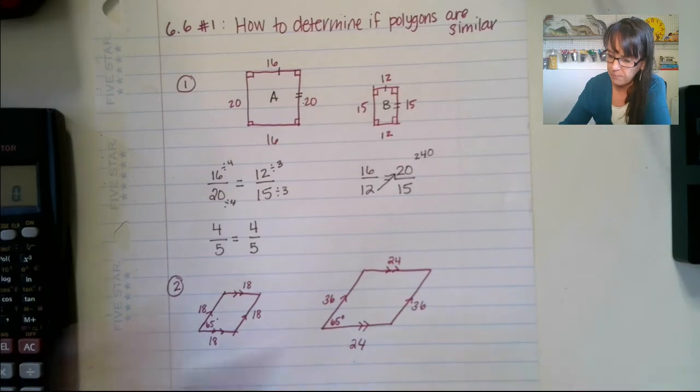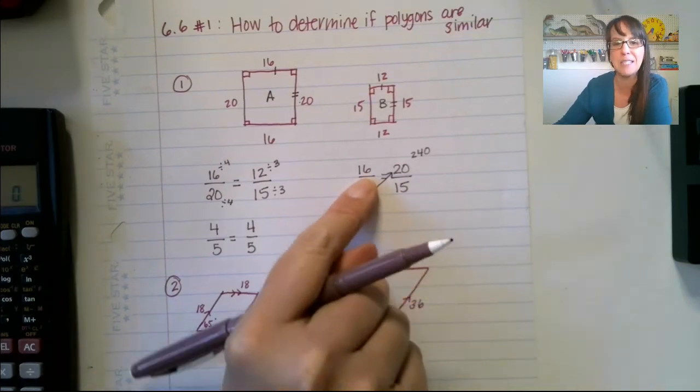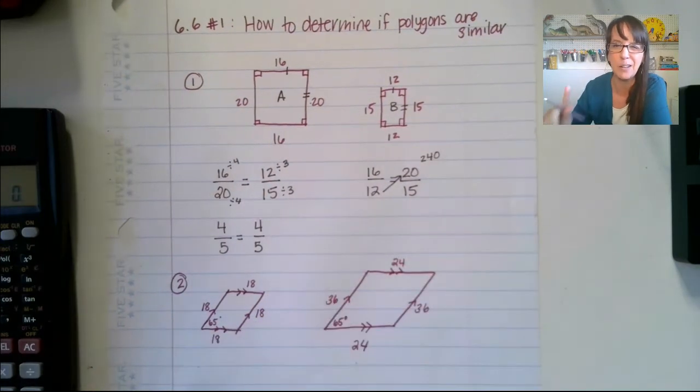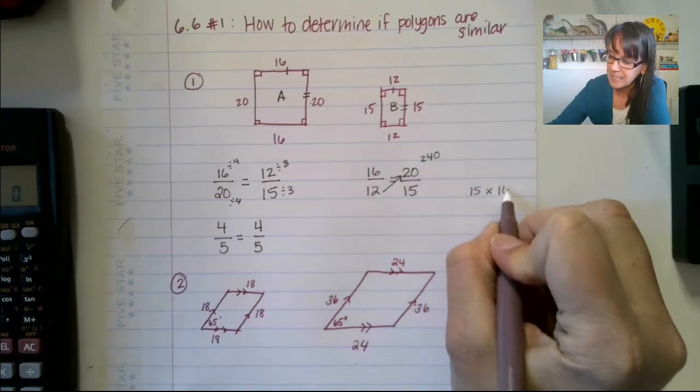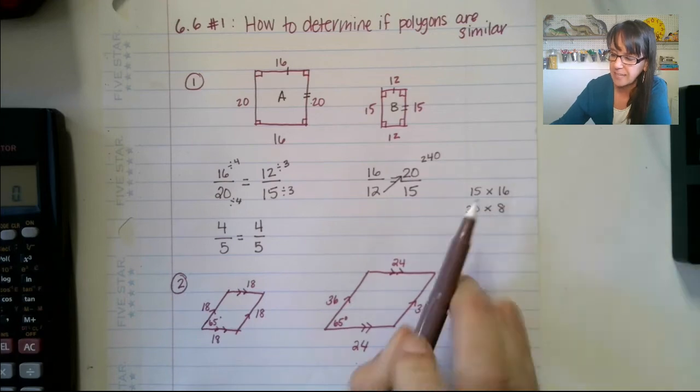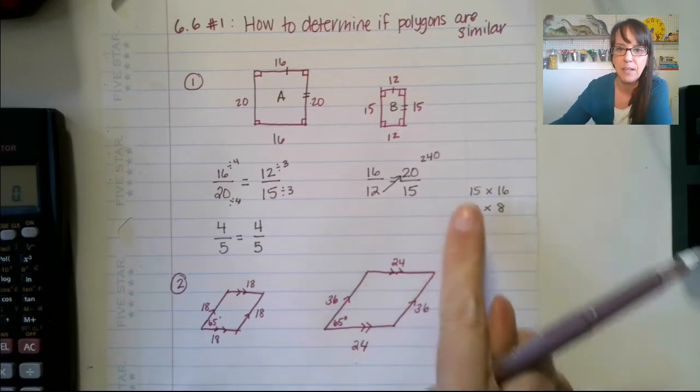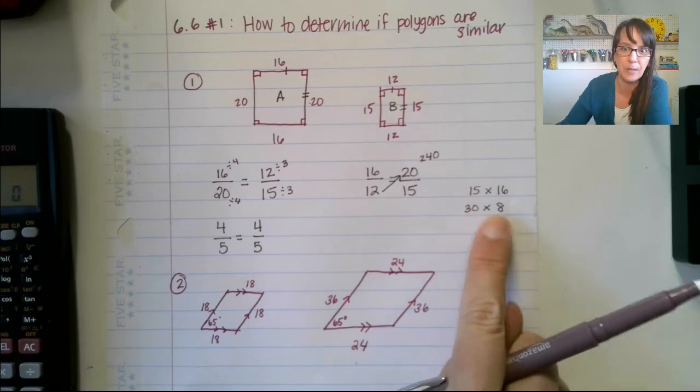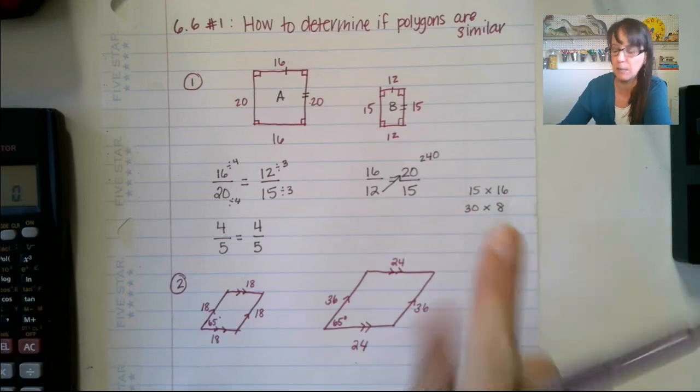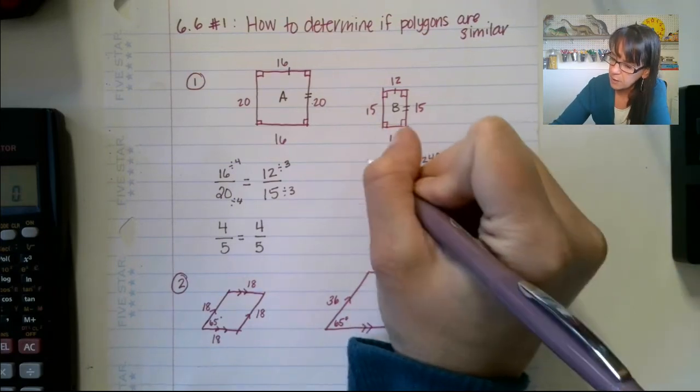And then we have 15 times 16. 15 times 16. Now let me show you a little mental math trick. 15 times 16 is the same as 30 times 8. See how I doubled that and cut that one in half? Well, 30 times 8 is a lot easier to multiply. And you know 3 times 8 is 24 plus a 0. We get 240.